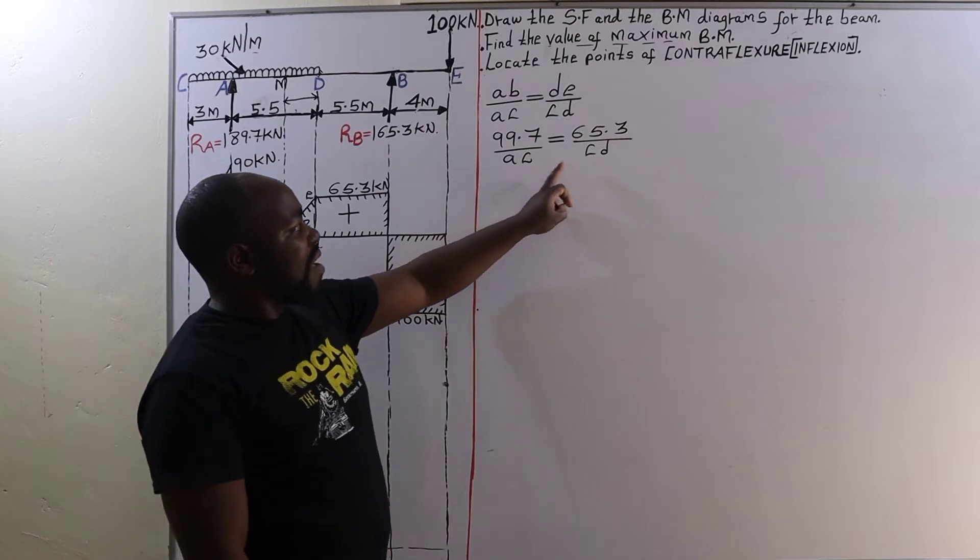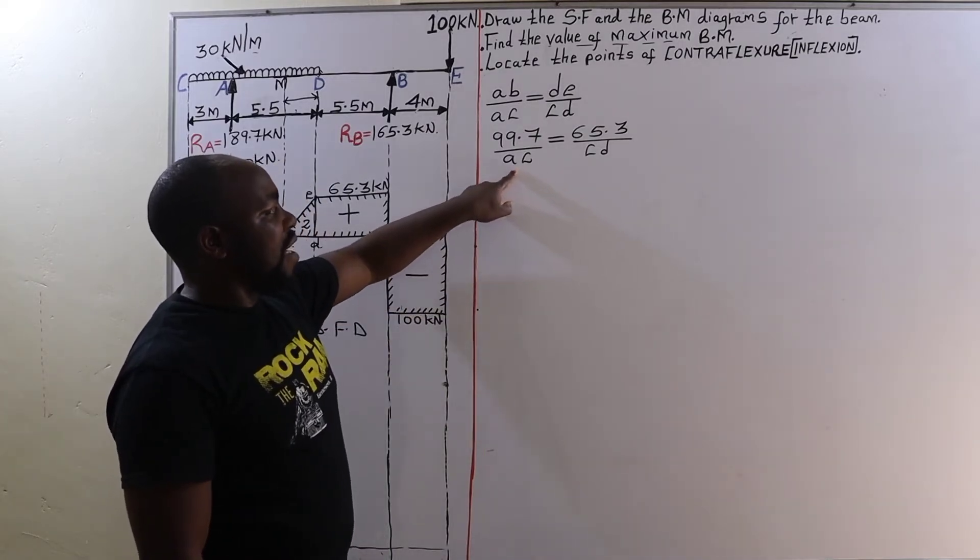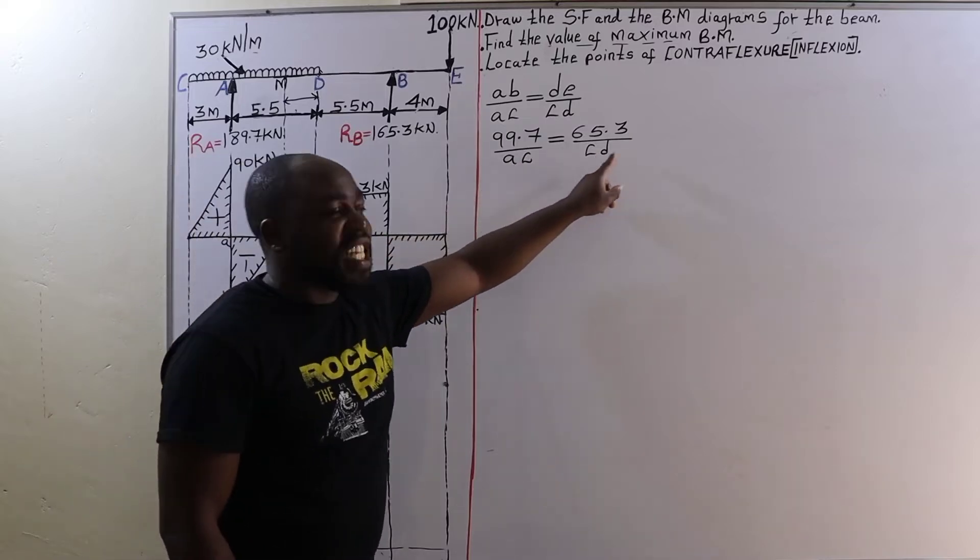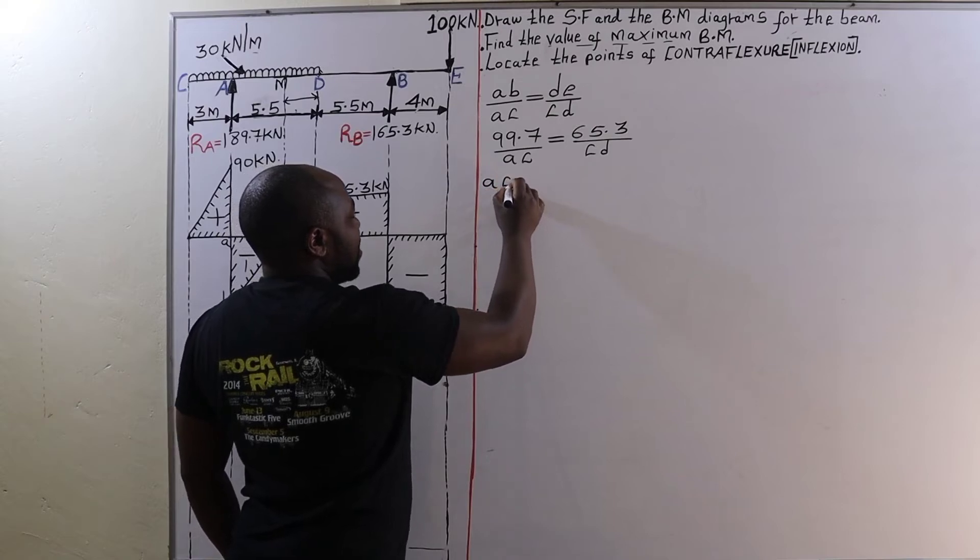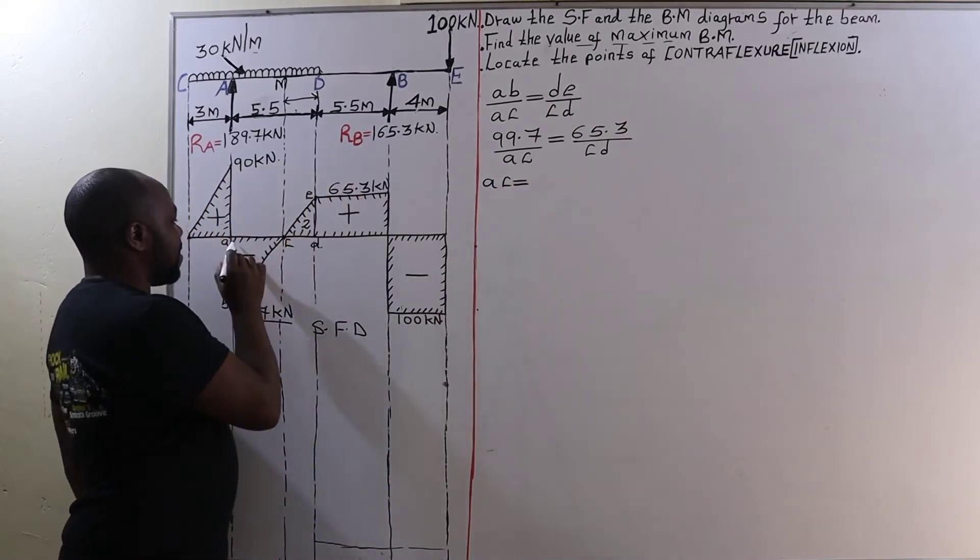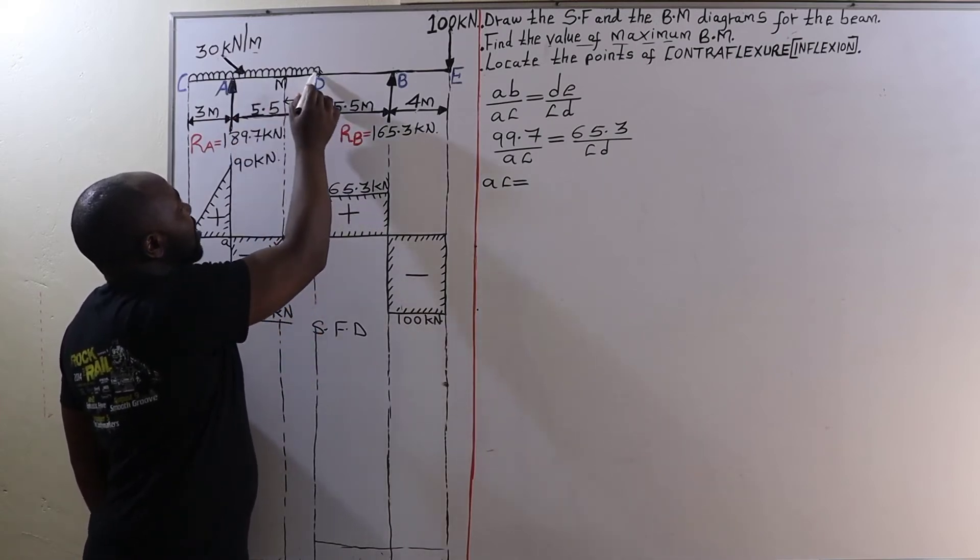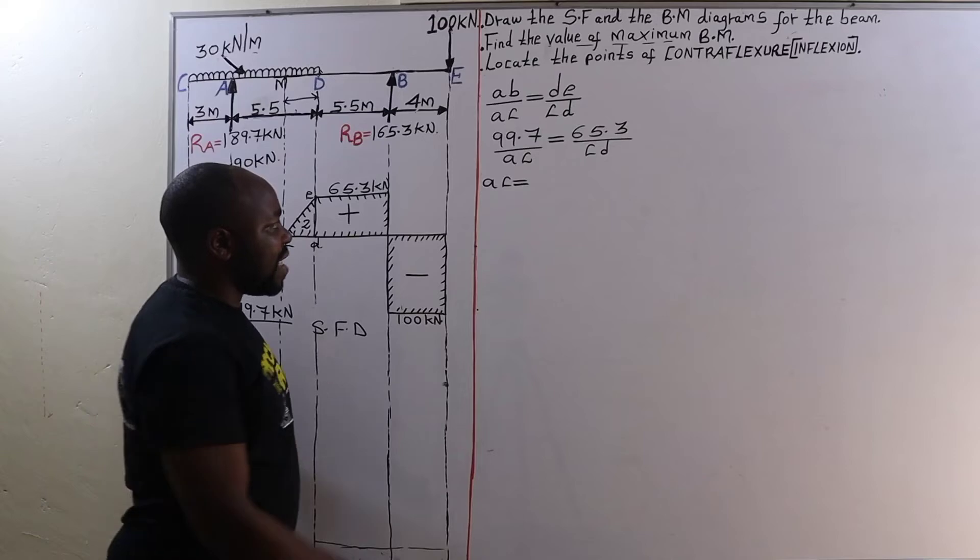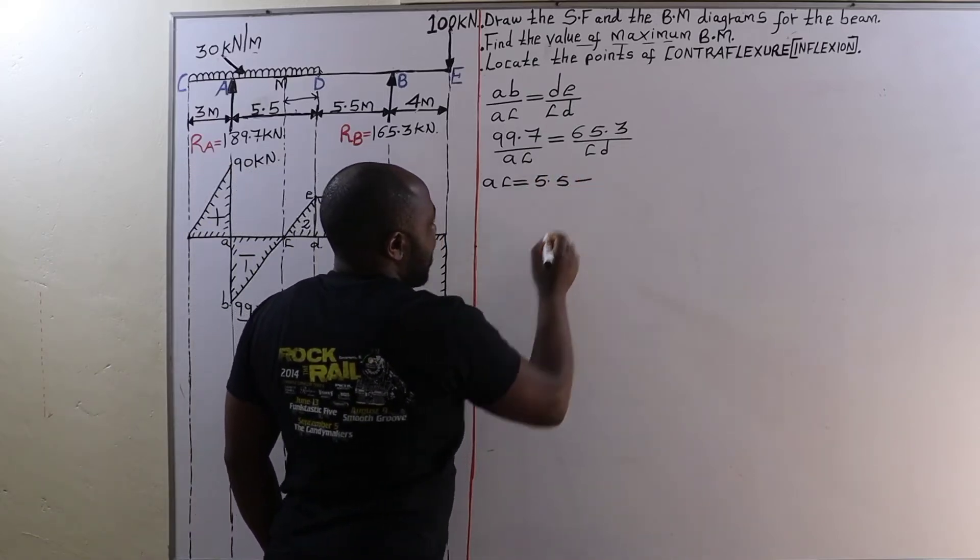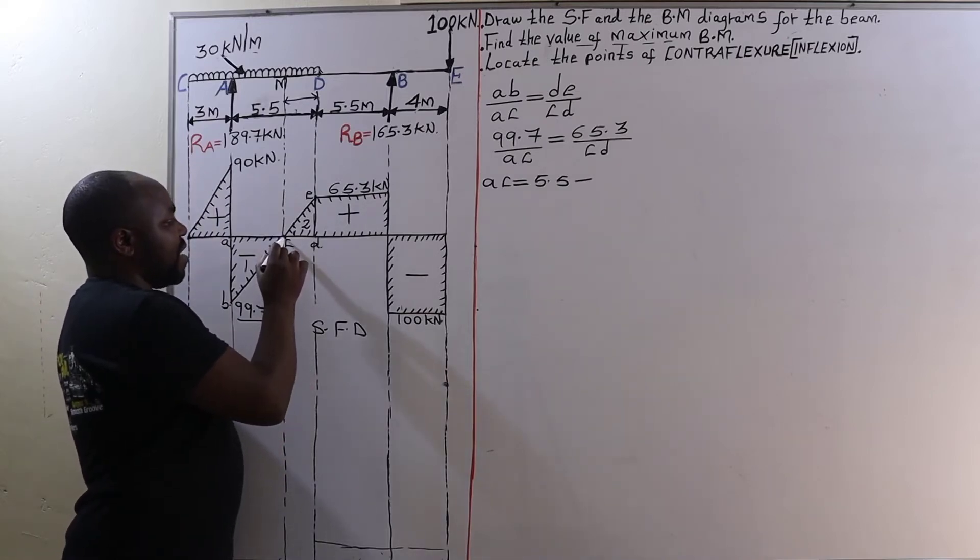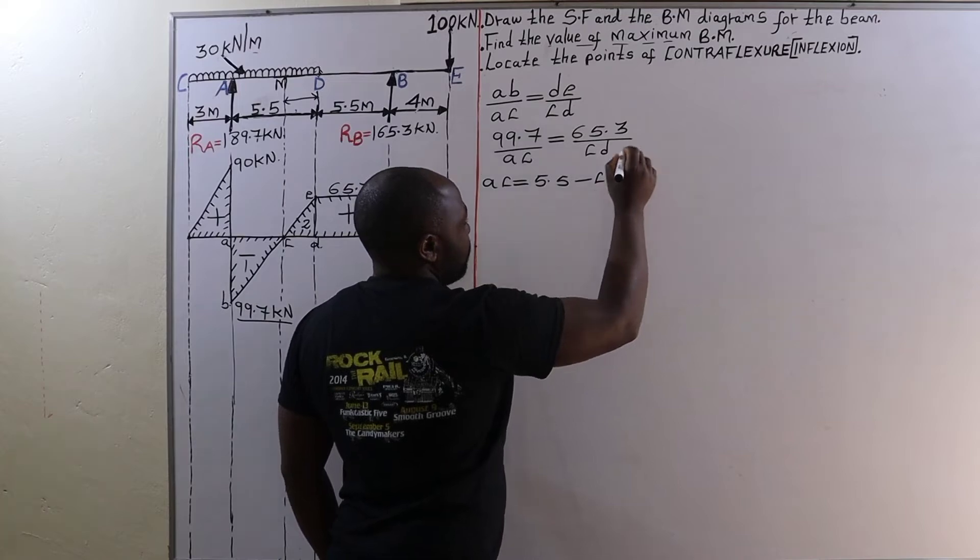Now since we can't work with two unknowns, we are going to write AC in terms of CD. How? Now A to C can be given by the distance from A to D, the whole of this distance from A to D which in this case is 5.5 meters. Therefore 5.5 meters minus the distance from C to D.